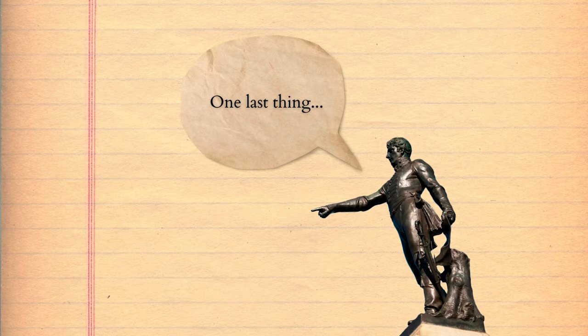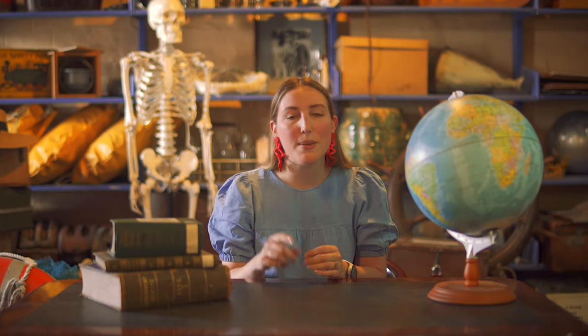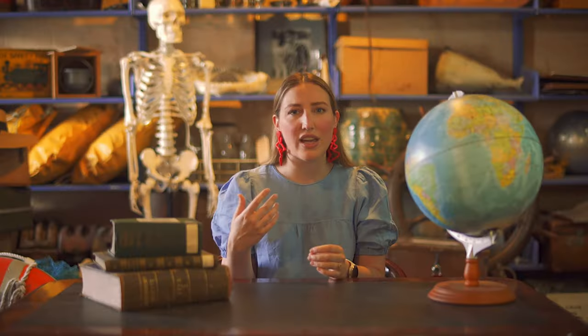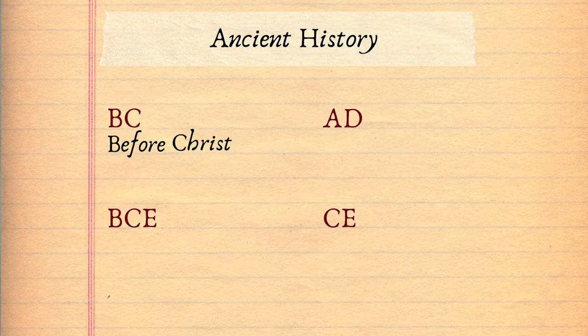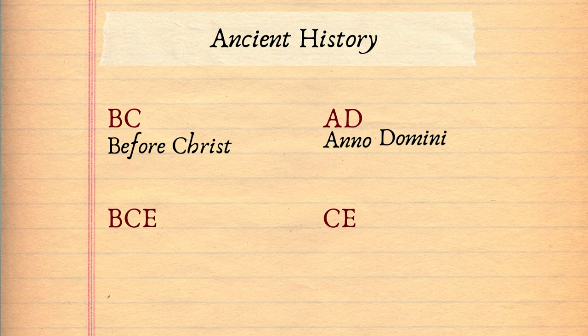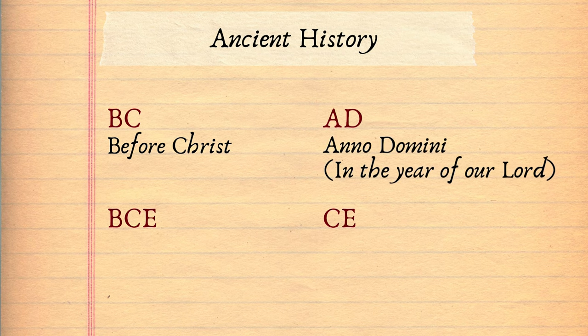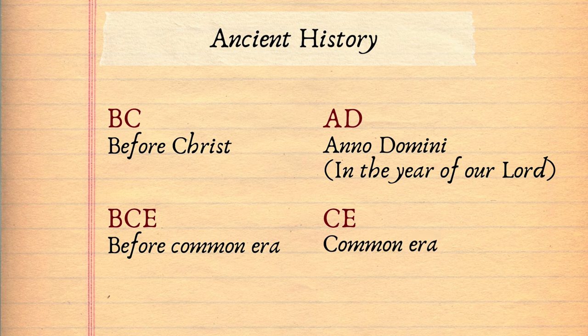One last thing. You might come across the terms BC, AD, BCE, or CE when you're looking at ancient timelines. These terms mean Before Christ, Anno Domini or in the year of our Lord, Before Common Era, and Common Era.